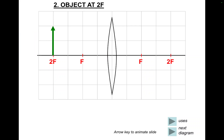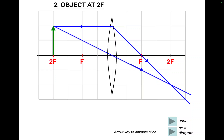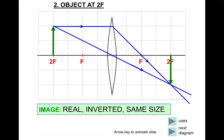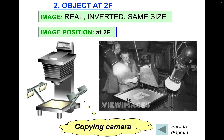Object at 2F. We do the first construction ray parallel to the principal axis, refract through F. Second ray straight through the optical centre, undeflected. With the two construction lines we get our image. It's on the opposite side of the lens so it's real; it's upside down so it's inverted; and in this instance it's the same size as the original object. Uses: copying camera and a projector.